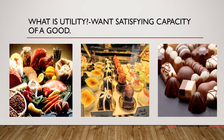As you can see here, there are three pictures — one with fruits and vegetables, another with pastries, and the third with chocolates. These are examples of goods that have utility for us. Utility means all these goods have the capacity to satisfy our wants. So what is utility? Utility is the want-satisfying capacity of a good.